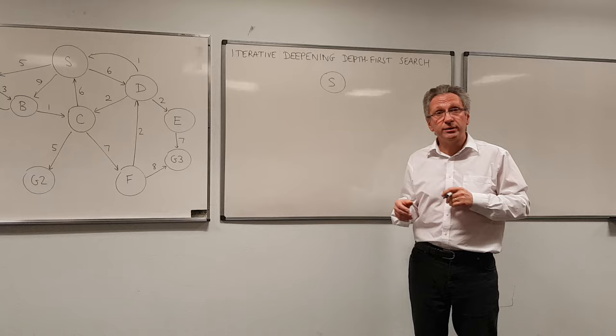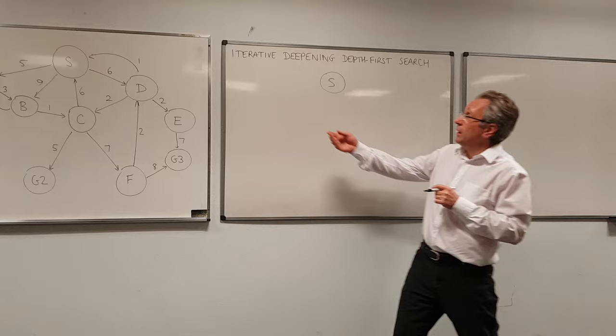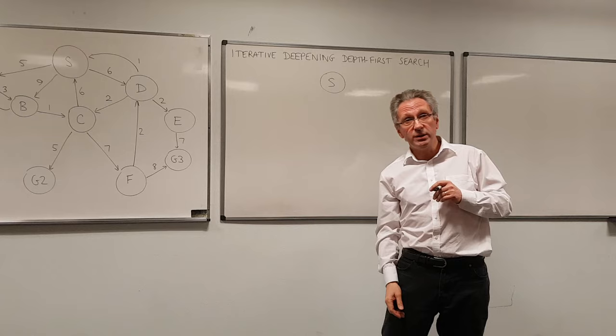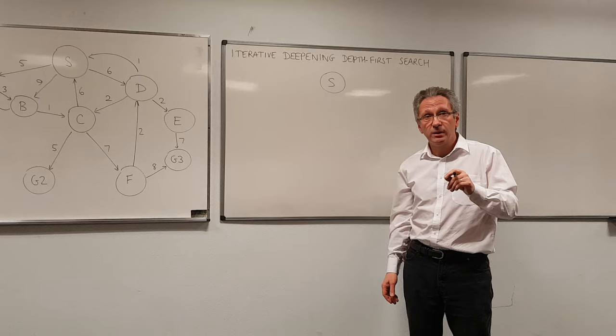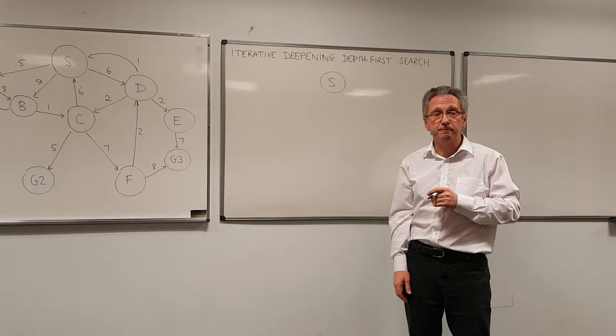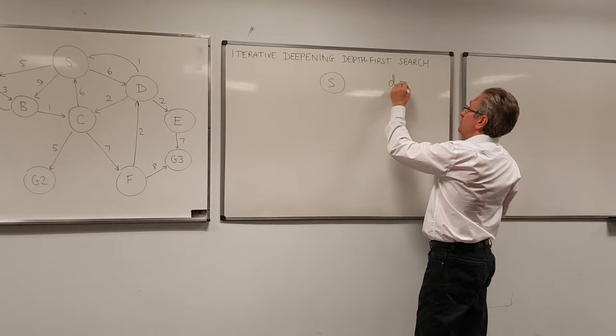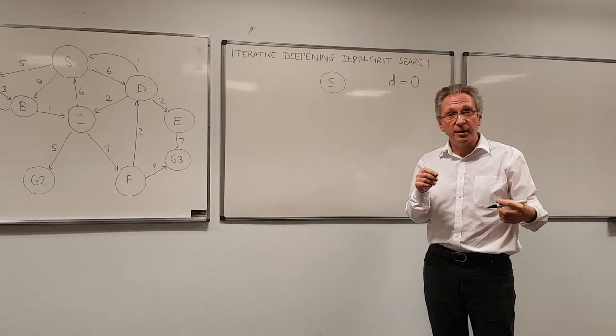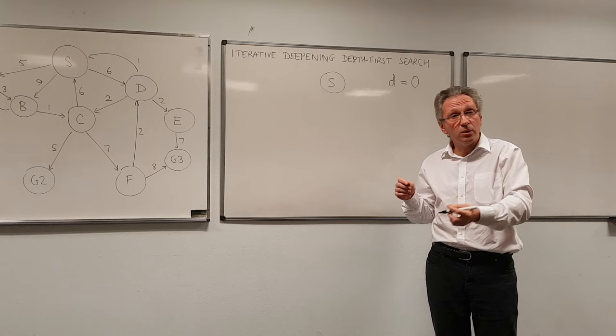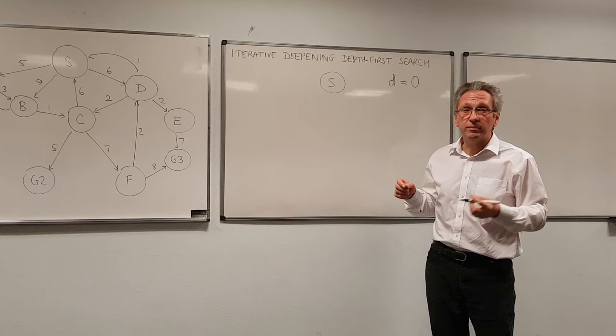So therefore what we've got here is a version of depth first search called iterative deepening. And what it's going to do is run depth first search but with a depth bound. And what that means is that if we reach the depth bound we treat that as a dead end. We're going to start with a depth bound of zero say, then increase it by one every time until we find a depth bound at which depth first search returns a goal state. And then we know when it does return a goal state that it's going to be the shortest plan.